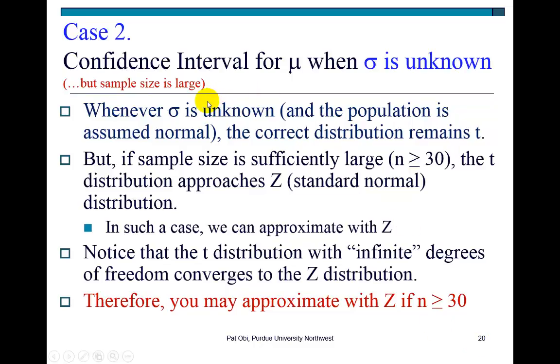In this second case, we revisit the confidence interval estimation for the population mean mu when sigma is unknown. However, here we assume large sample sizes. Whenever sigma is unknown, the correct distribution to use is t. But if the sample size is sufficiently large, the t distribution begins to look like the z distribution, so we can approximate using z.